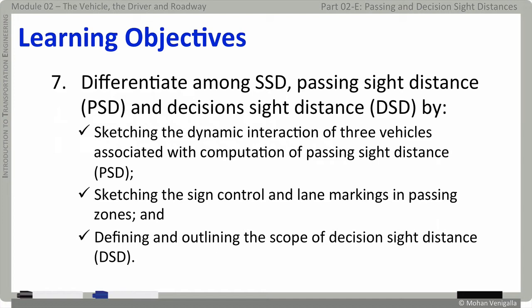Your takeaway from this part is going to be about differentiating stopping sight distance with two other types of sight distances called passing sight distance and decision sight distance. You will be able to sketch the dynamic interaction among three vehicles involved in a passing maneuver, as well as the sign control and lane markings in a passing zone.